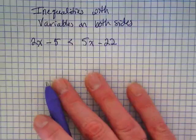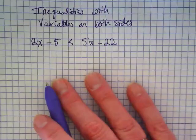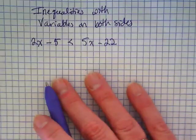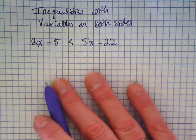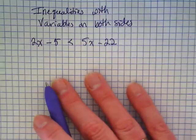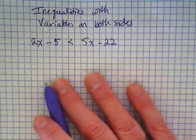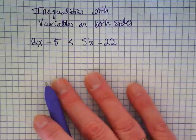What would it ask us to do here? Are there any grouping symbols? Are there grouping symbols? No. Do we have like terms on either side?